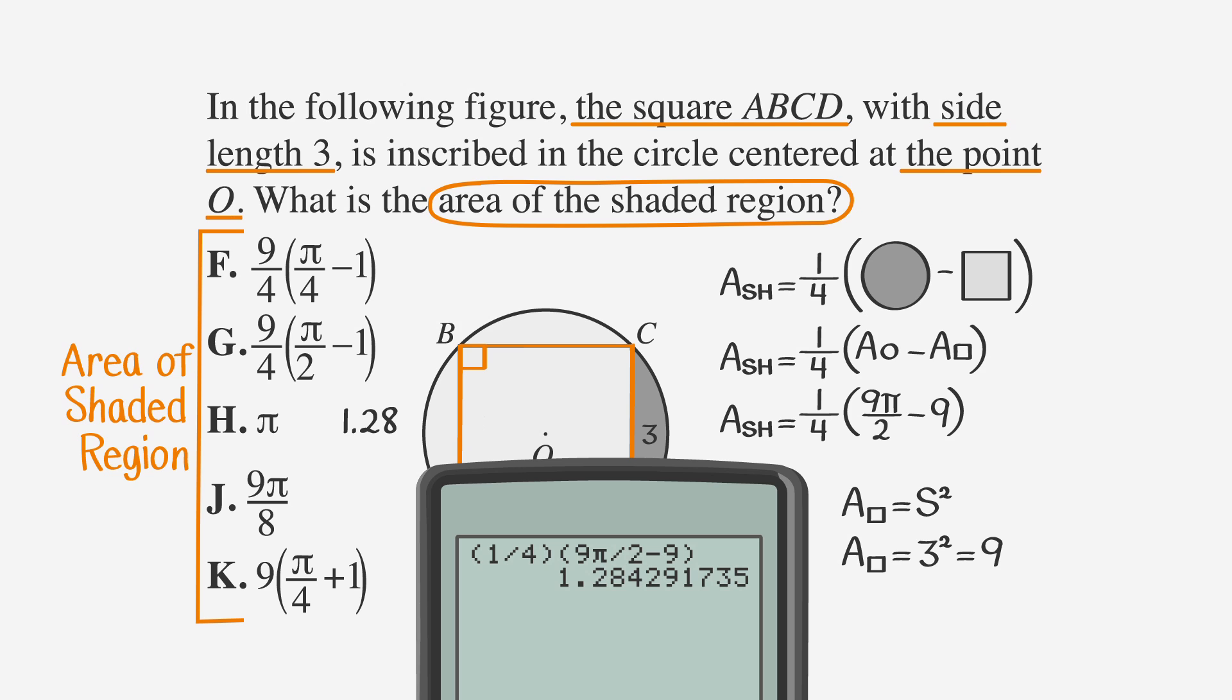Pi is approximately 3.14. That's too big. The answer choices are usually listed from least to greatest, so let's try choice G. Plugging this into our calculator, we see that choice G matches our number. We've got our answer.